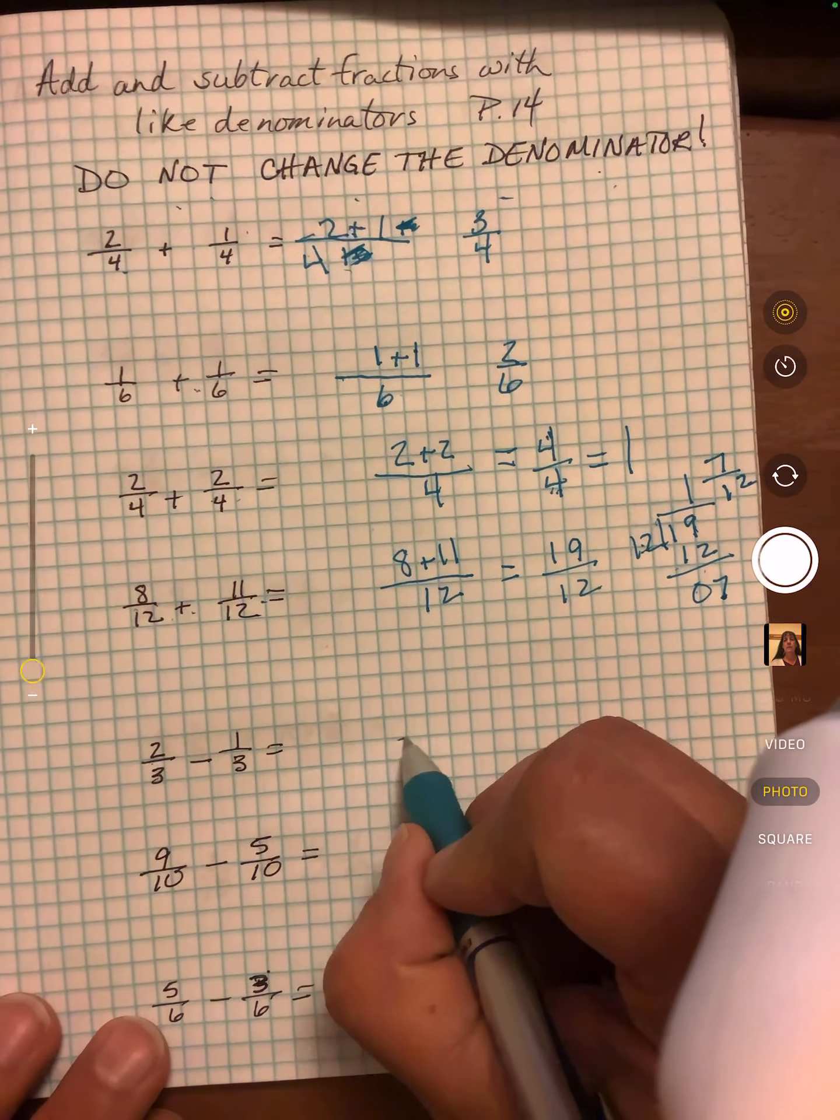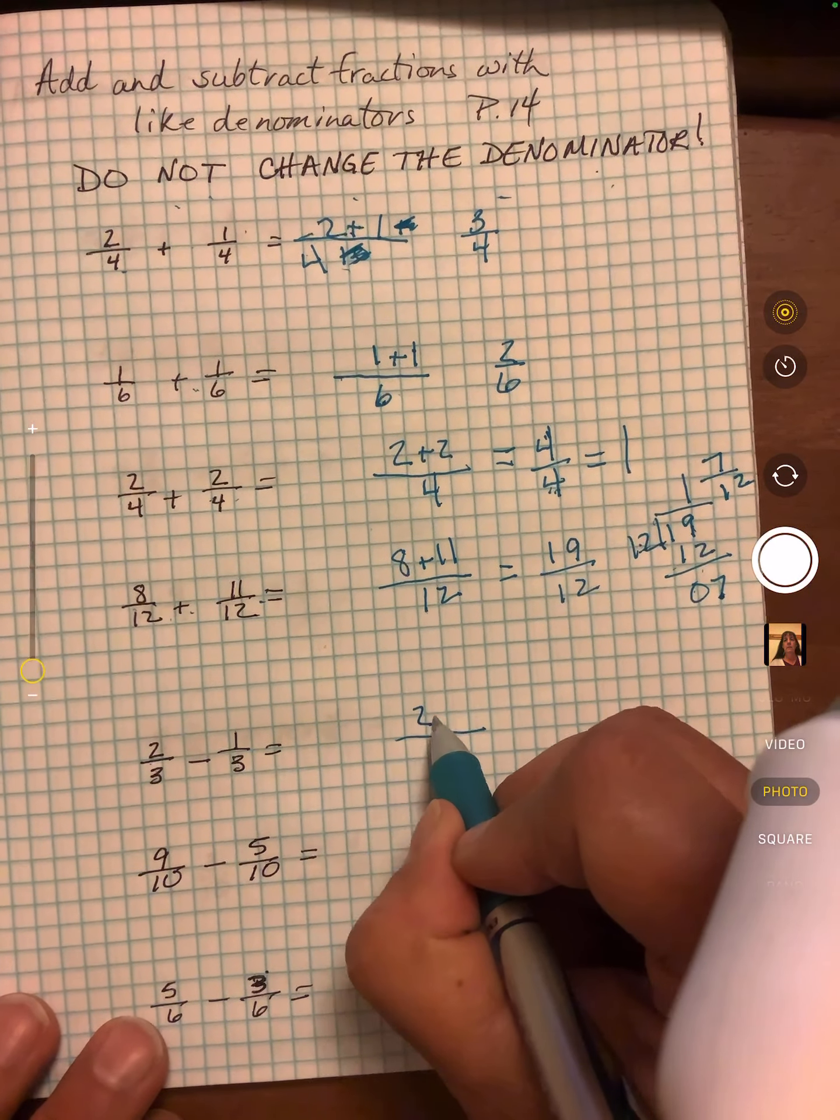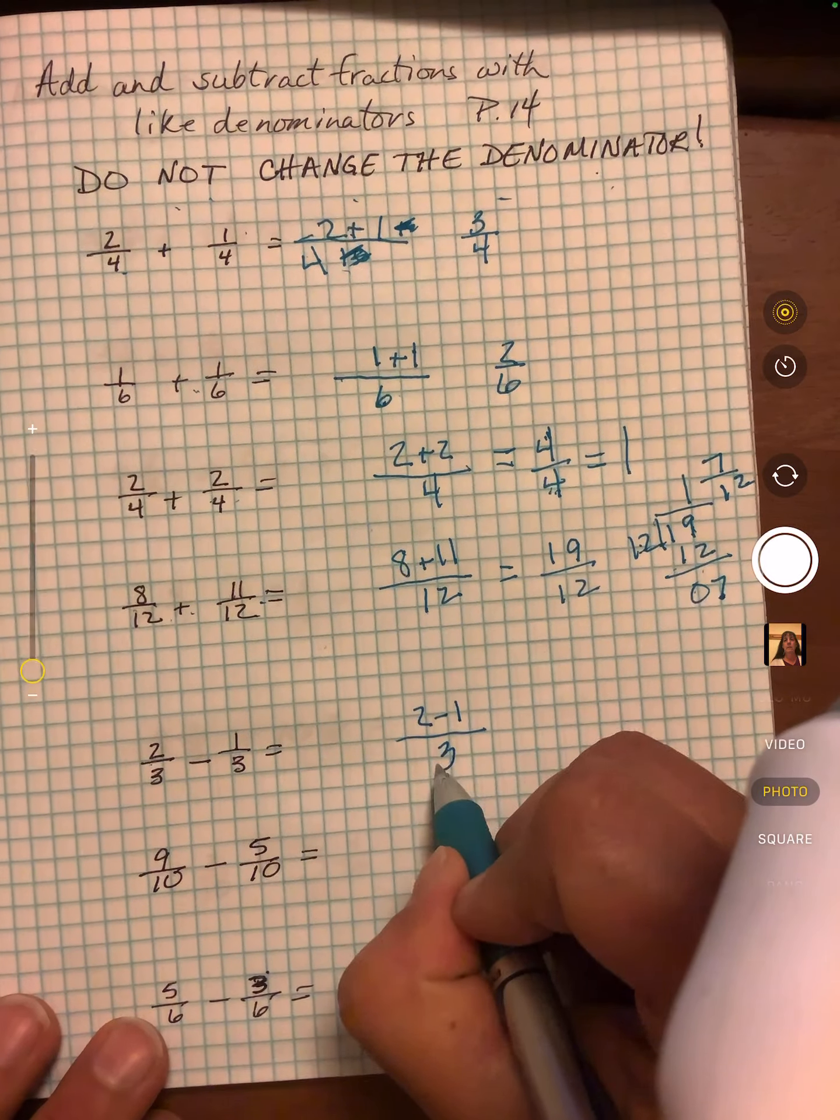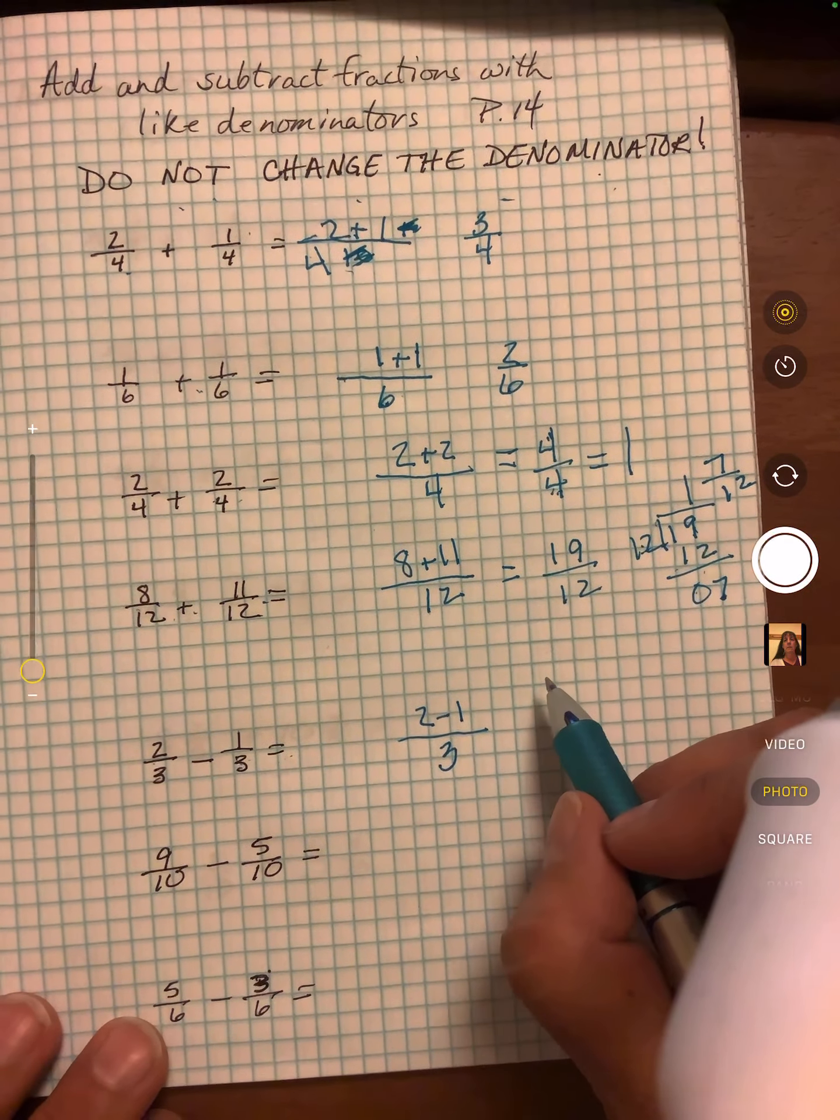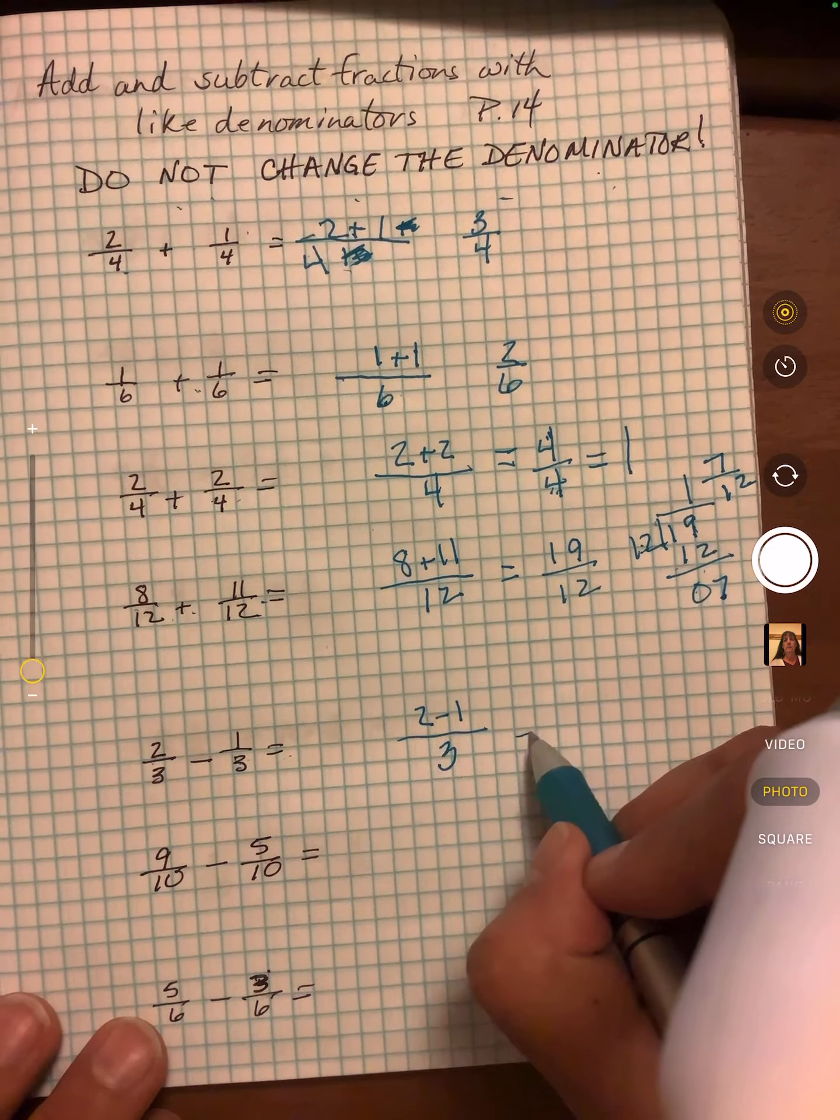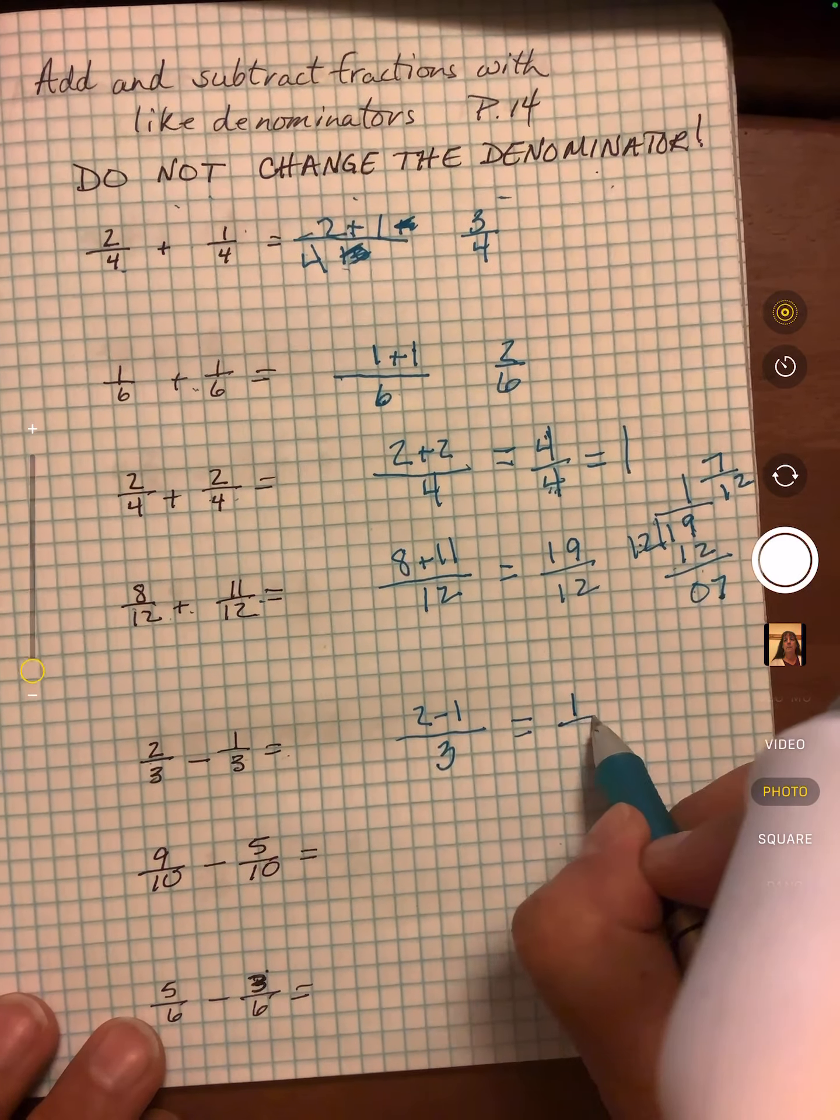Subtracting. Same thing. Two minus one over three because this stays the same. Denominator stays the same. Two minus one is one third.